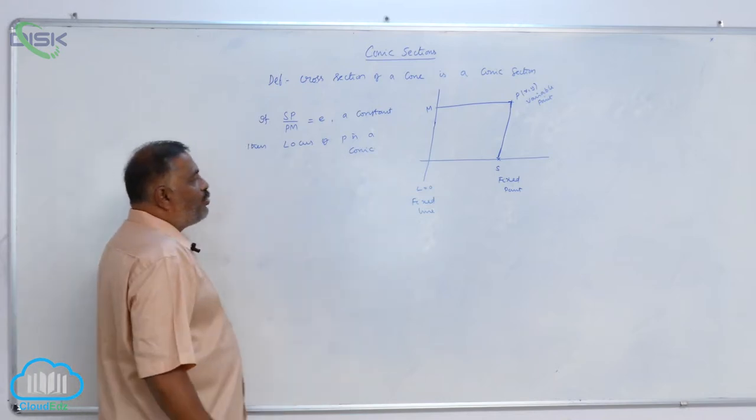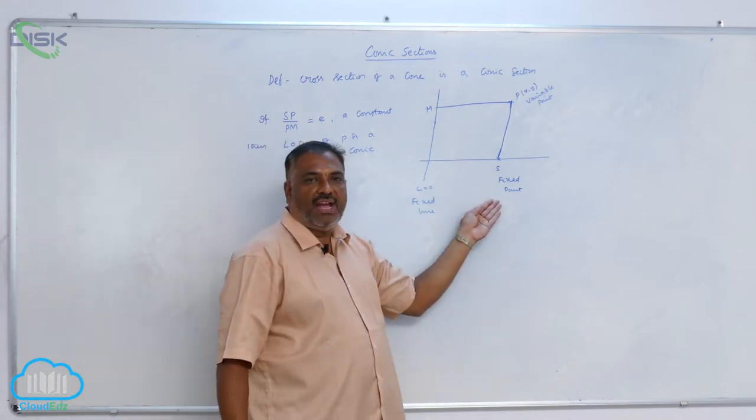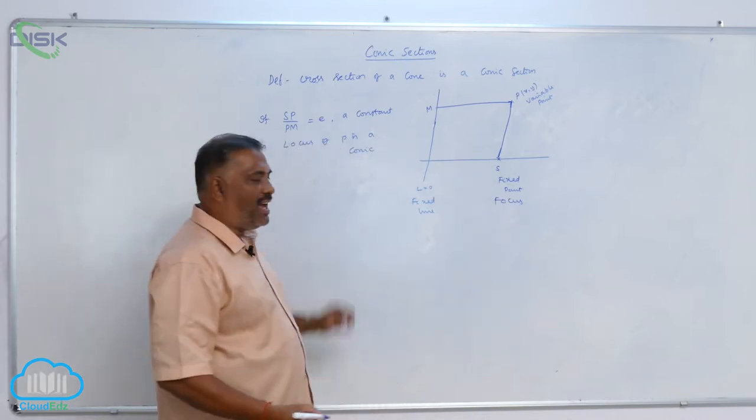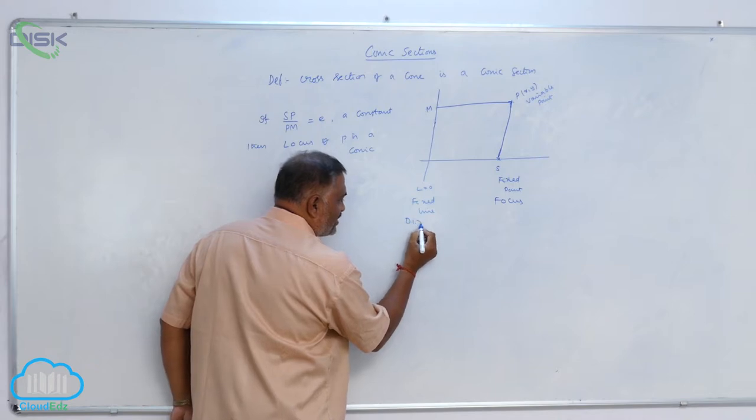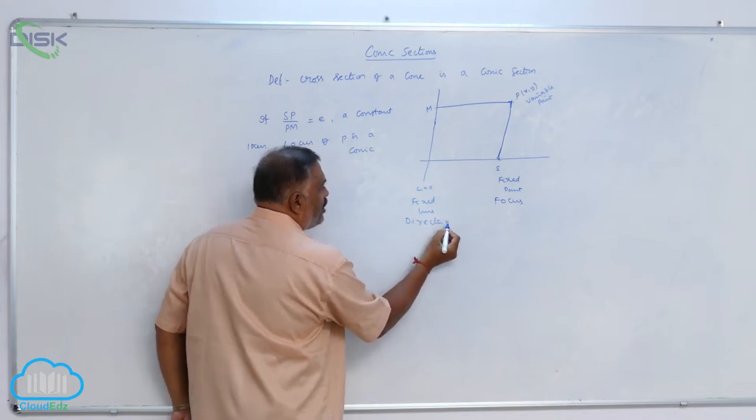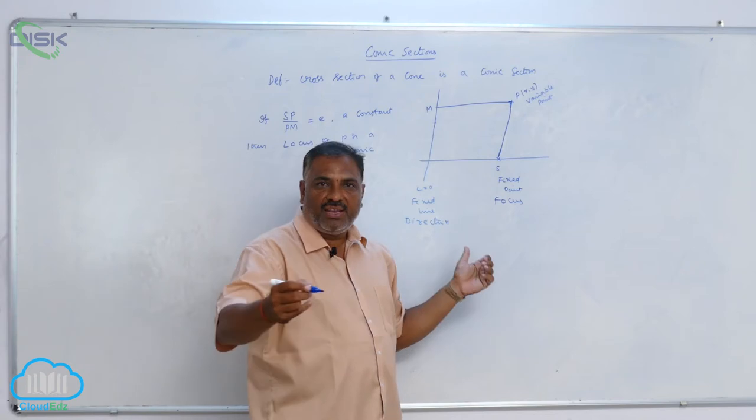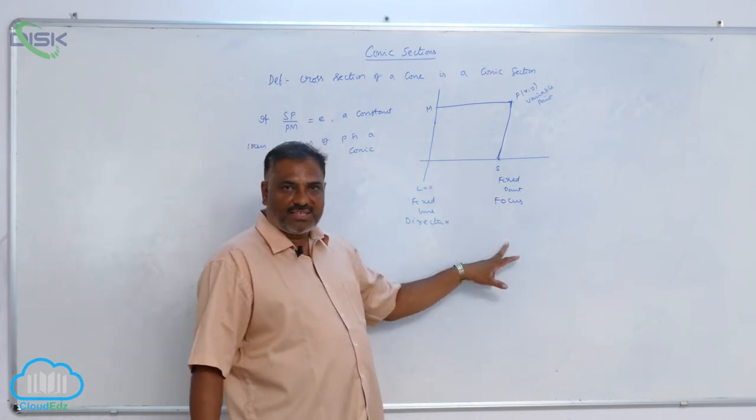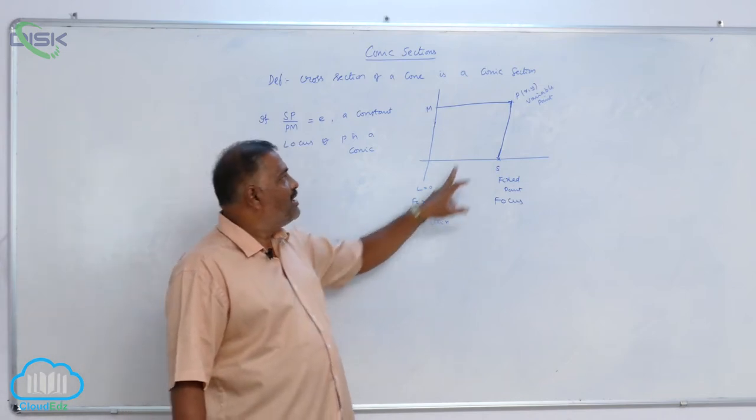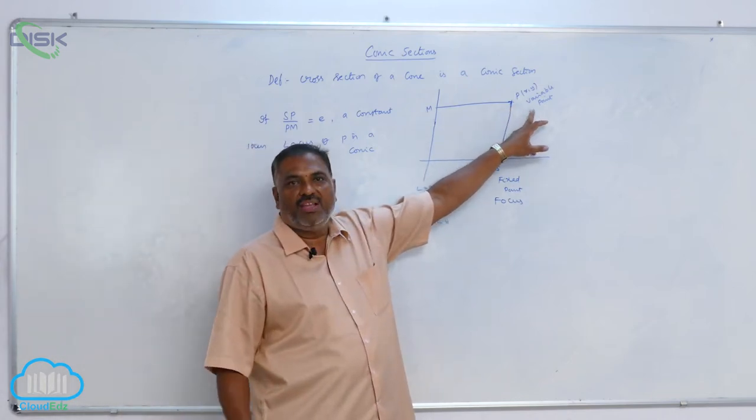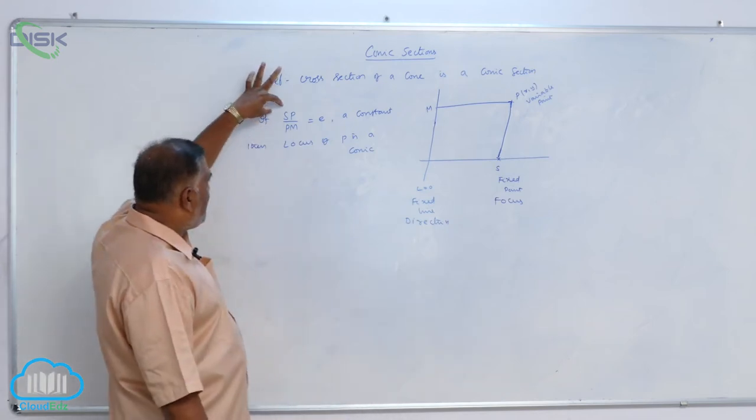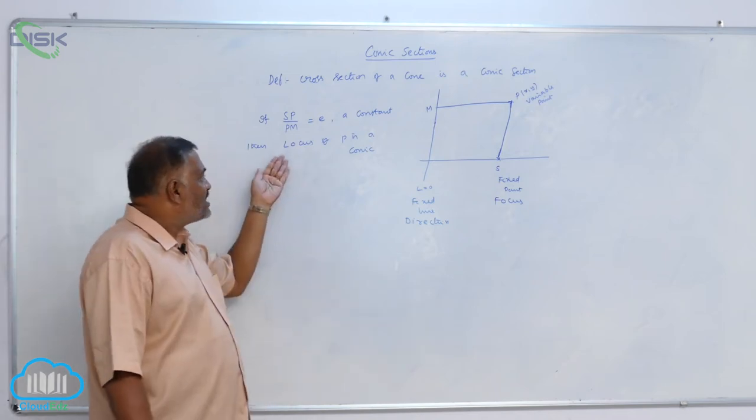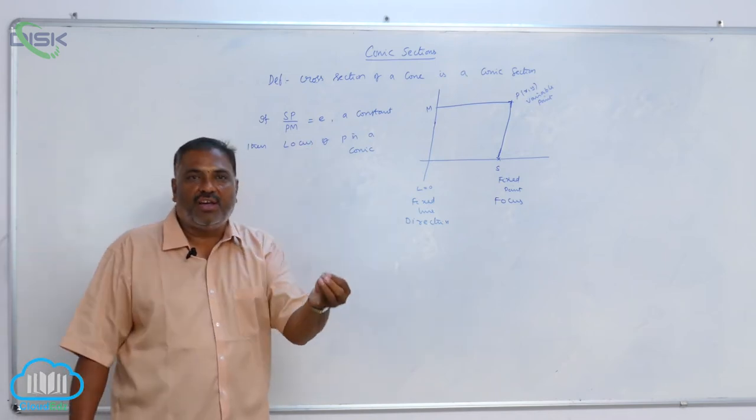Here, we define fixed point as focus and fixed line as directrix. So, using these two, we will define the conic again. Let S be the focus, L equal to 0 be the directrix, P is a variable point. If SP by PM is equal to E, a constant, then locus of P is nothing but a conic equation.